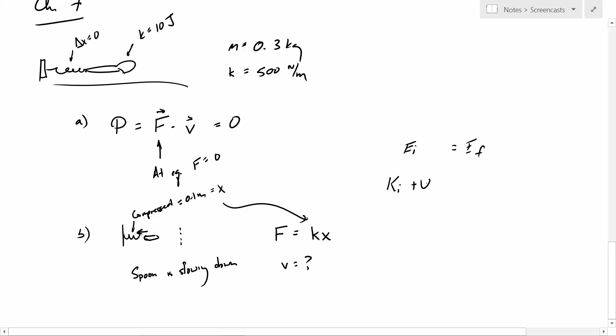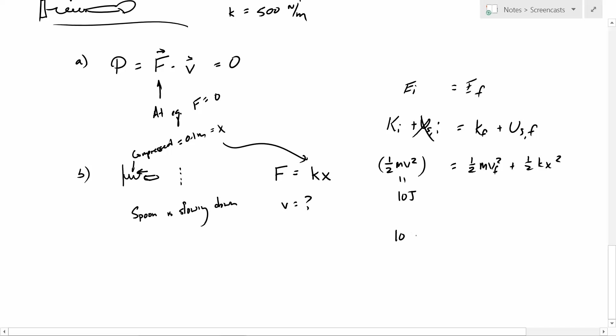Initially, we have kinetic, no elastic. Finally, we have some kinetic, some elastic. So, this we know is one-half m v squared, but more importantly, we know it's 10 joules. This we know is one-half m v final squared, and this we know is one-half k x squared. So, we know that v final, we know everything else. We know it's 10 minus a half k x squared by a half m, and we root that, and that gets us v.